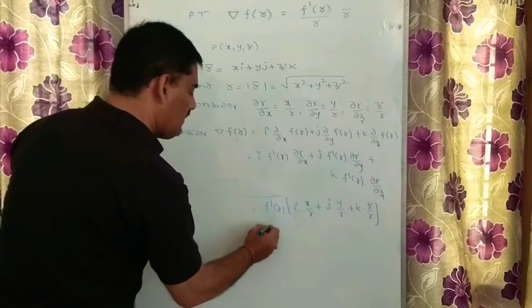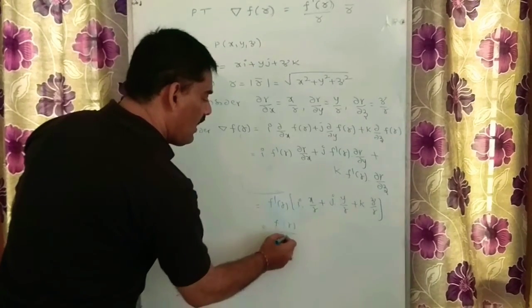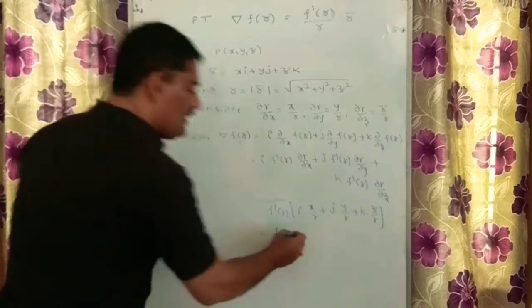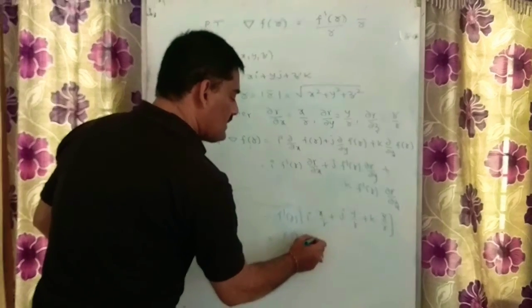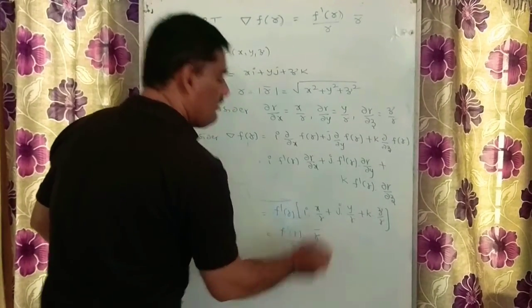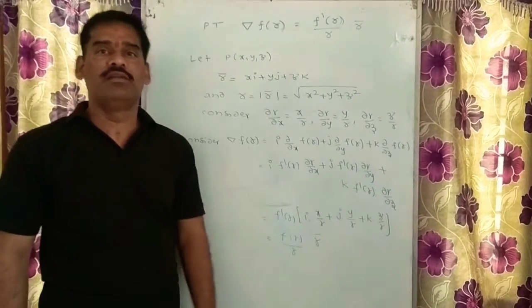From this directly, f dash of r divided by r is common, and we have xi plus yj plus zk, which is exactly your r bar value. So this is your given statement as per your problem.